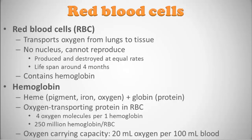What is hemoglobin? Let's separate those words: the 'heme' is the pigment, the iron, and the oxygen, and the 'globin' is the protein that holds it all together. Hemoglobin is responsible for binding oxygen and holding it in the red blood cell — specifically four oxygen molecules per hemoglobin. In total, there are 250 million hemoglobin per one red blood cell. This means in 100 milliliters of blood you carry about 20 milliliters of oxygen.